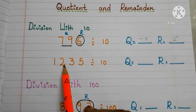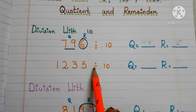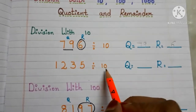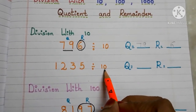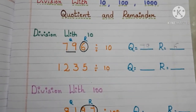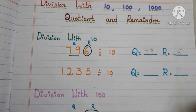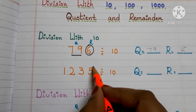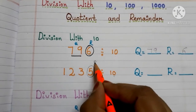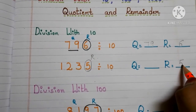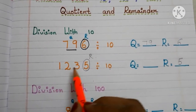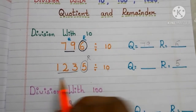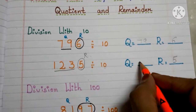Here we have the number 1235 divided by 10. In the number 10, how many zeros are there? Only one zero is there. So the last digit — the digit which is in the one's place — becomes the remainder. The remainder is 5. The remaining digits become the quotient. The quotient is 123.